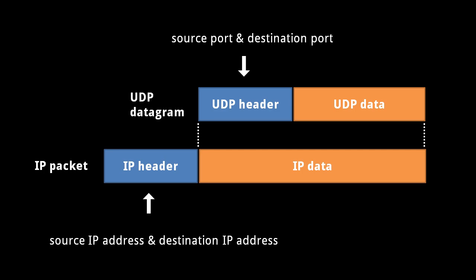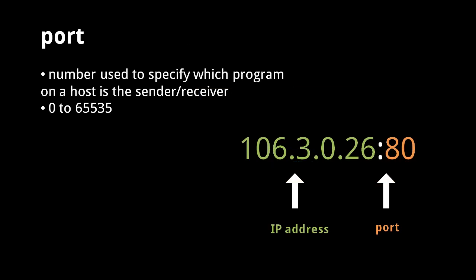Whereas an IP packet header conveys the source and destination IP addresses, a UDP datagram header specifies source and destination port numbers. These port numbers are 16-bit values ranging from 0 to 65,535, and effectively specify which processes are sending and receiving the packet. By convention, ports are written after a colon following an IP address — for instance, specifying port 80 at address 106.3.0.26.